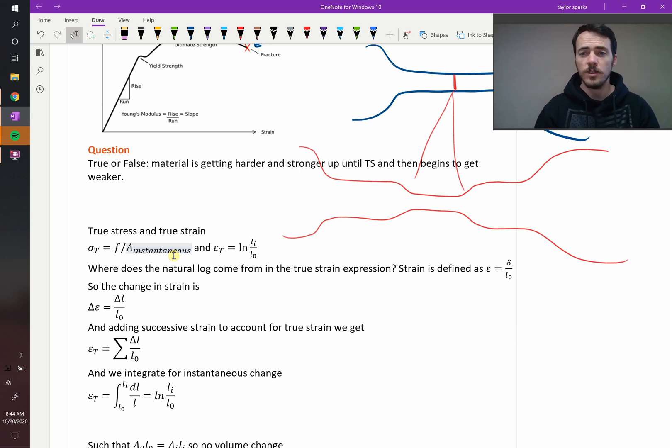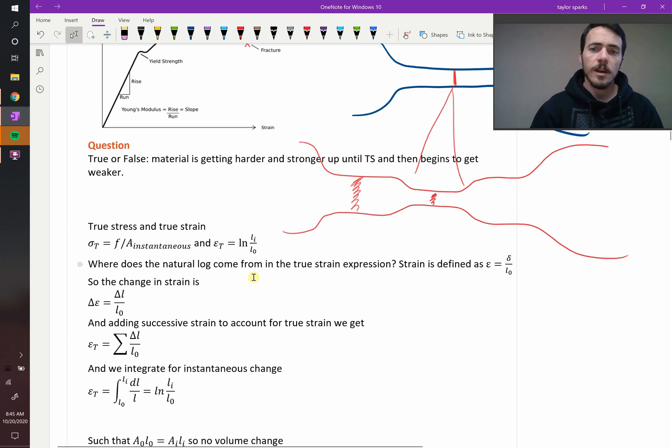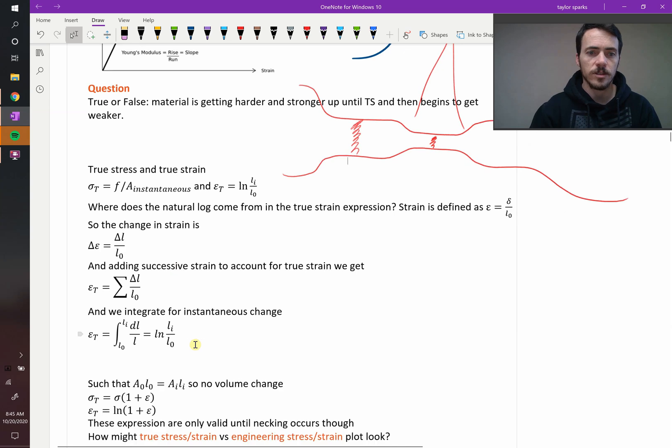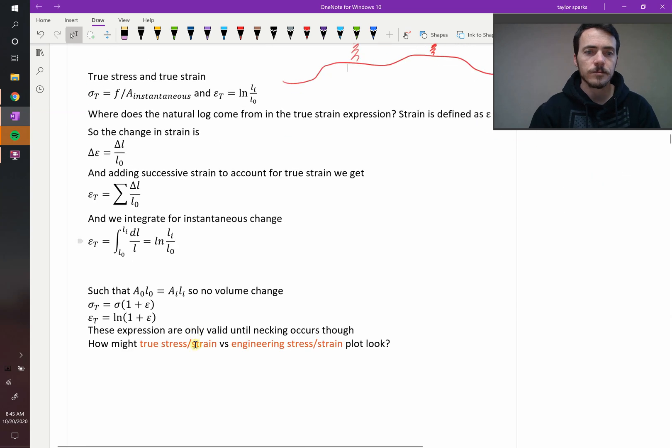Because if it draws down, like this cross-sectional area right there is way smaller than what you started out with. And then your true strain would be the natural log of your instantaneous length divided by your initial length. And where does that come from? We've done the derivation here, but I'm going to skip it for this class. You can take a look at it if you want.